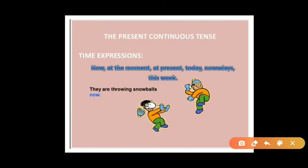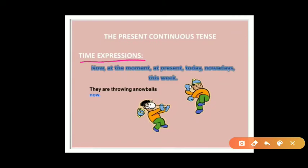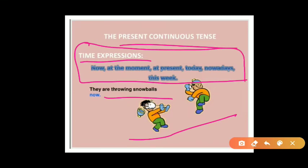Time expressions used in present continuous tense include: 'now', 'at the moment', 'at present', 'today', 'nowadays', and 'this week.' For example: 'They are not throwing snowballs at each other — they are throwing snowballs now.' These are the time expressions used with present continuous tense.